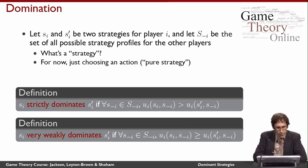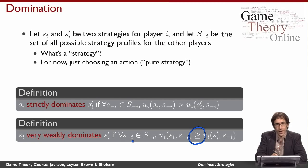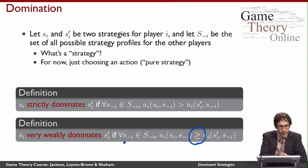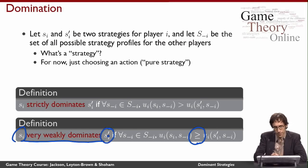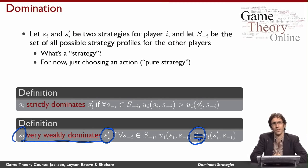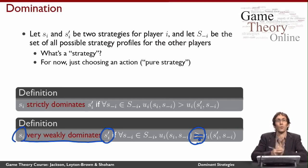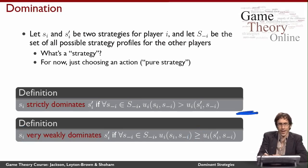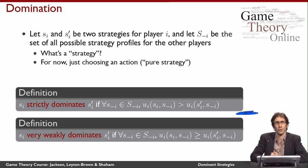Now we have another notion of dominance, which I call very weak dominance. It's almost the same definition — the only difference is that I have a weak inequality instead of a strict inequality. So no matter what everybody else does, I'm always at least as happy playing si as I am playing si prime. When that's true, I say that si very weakly dominates si prime. This condition even allows for equality, so even if si and si prime always give exactly the same utility, I'm still allowed to say si dominates si prime — which is why we soften it by calling it very weak dominance.